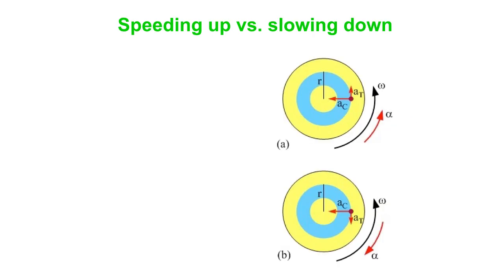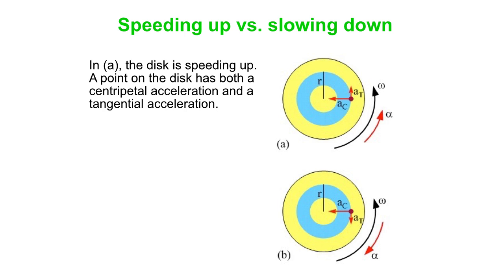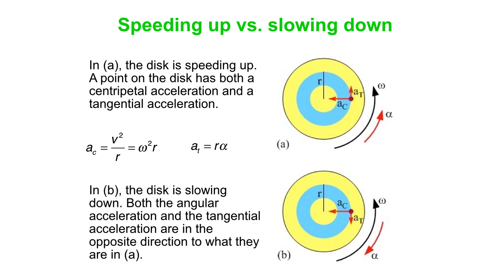Let's consider speeding up versus slowing down. When a disc is speeding up, a point on the disc has both a centripetal acceleration toward the center and a tangential acceleration tangent to its motion around the circle. The centripetal acceleration depends on the angular speed omega, whereas the tangential acceleration is connected to the angular acceleration alpha. If the disc is slowing down instead, we reverse both the angular acceleration and the tangential acceleration, but the centripetal acceleration — at the same omega — would be exactly the same.